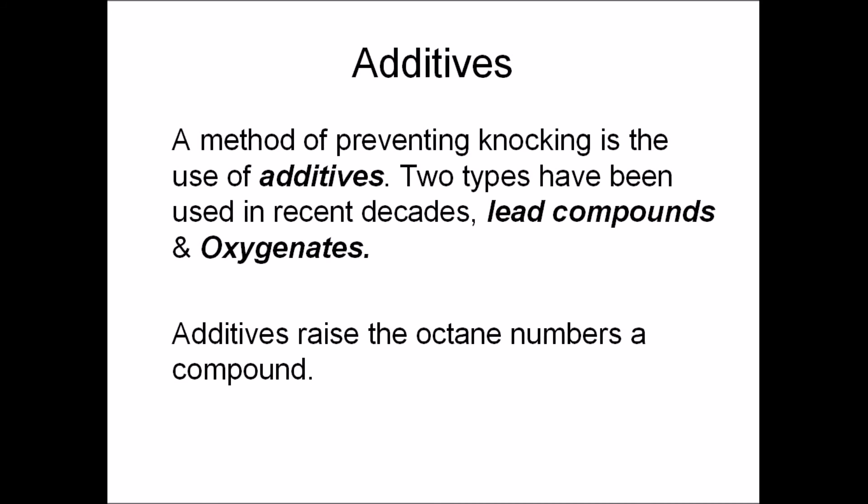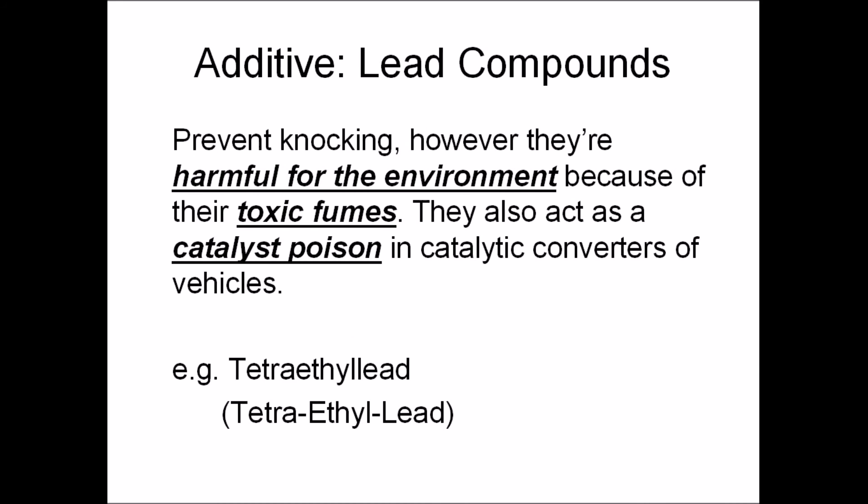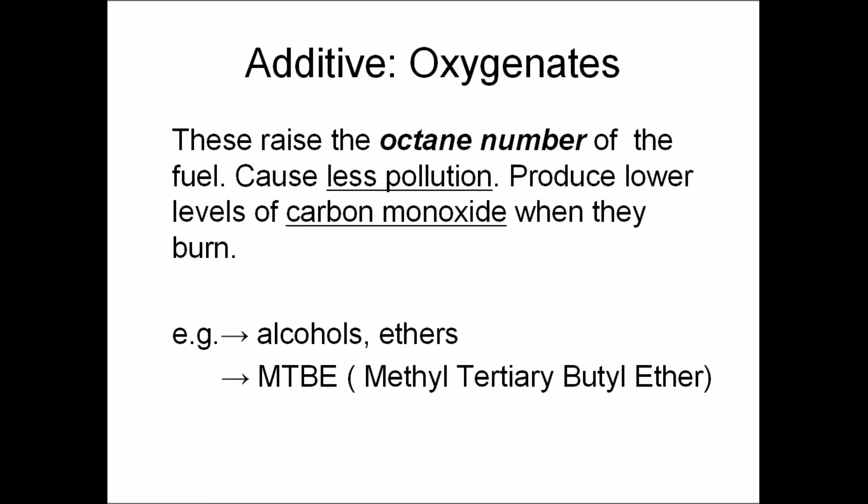You can add substances to petrol to increase its octane number. Lead compounds raise the octane number but they're really bad for the environment because of their toxic fumes — an example is tetraethyl lead. Oxygenates, on the other hand, are better additives because they raise the octane number without being as harmful to the environment. An example of this is MTBE, which stands for methyl tertiary butyl ether.